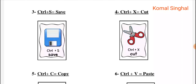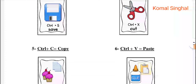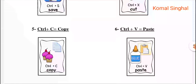Now the next key is 'Cut'. Suppose any part of our document was accidentally written in the wrong place and we need to cut it and write it somewhere else. So we will use Control plus X. First we will select that document or that line, and then we will use the shortcut key Control plus X. And wherever we need to paste it, we can paste it.